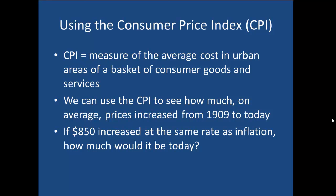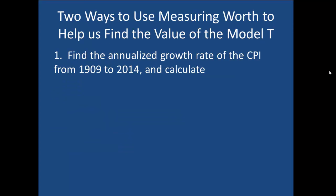In essence, we're finding: if we took $850 in 1909 and increased it at the same rate as average inflation, how much would it be today? There are two ways we can use Measuring Worth to help us with this calculation. First, we can find the annualized growth rate of the CPI from 1909 to 2014, then calculate the total growth of $850 over that time period.